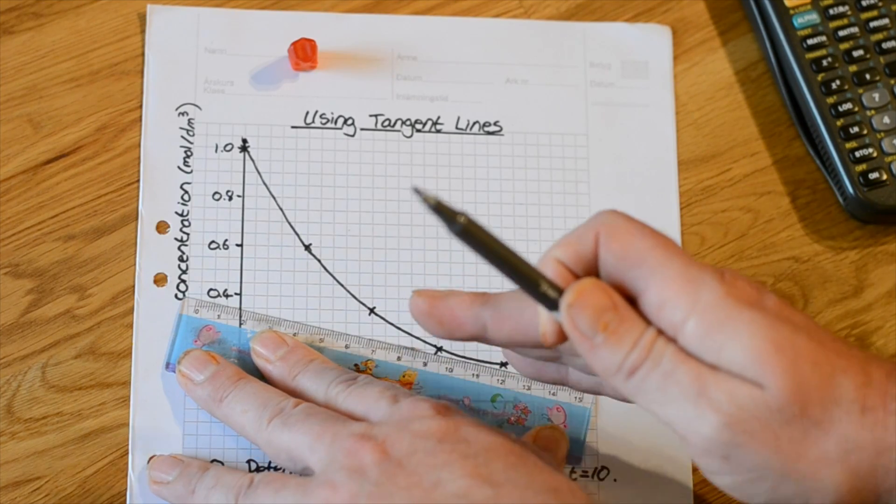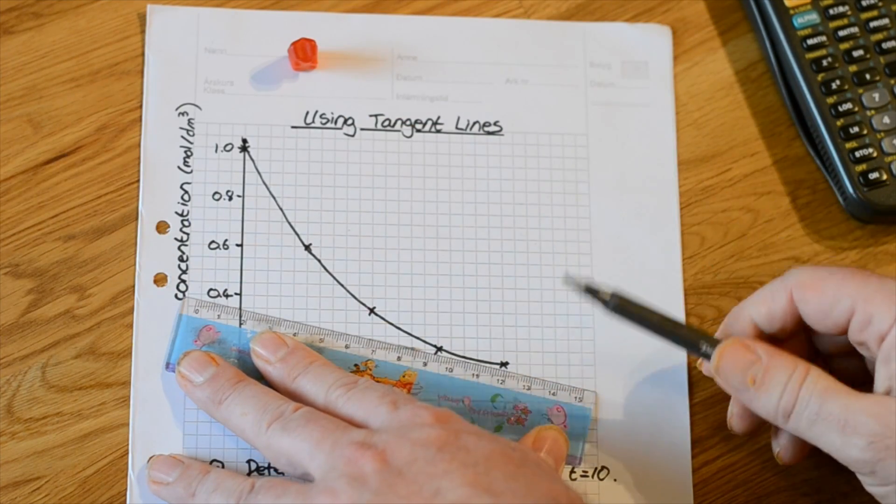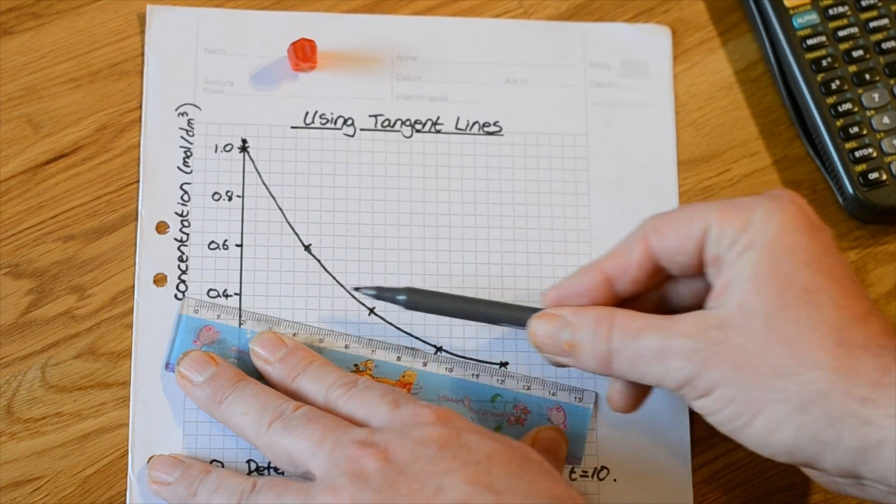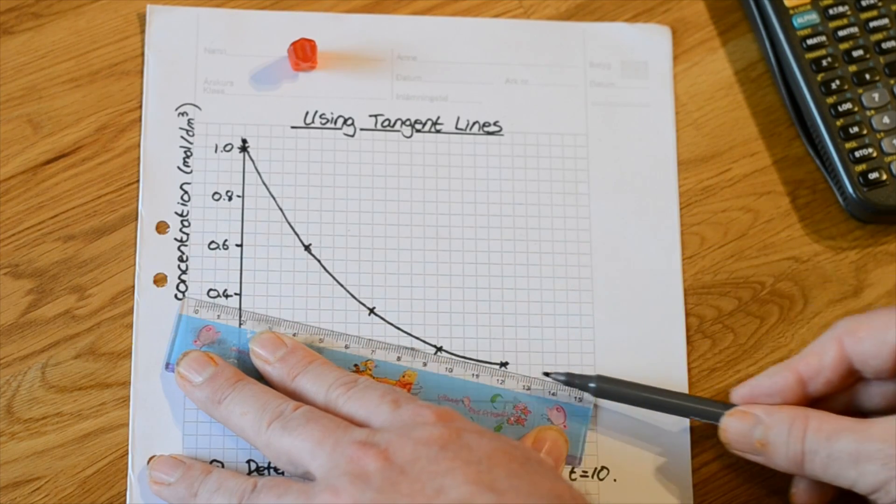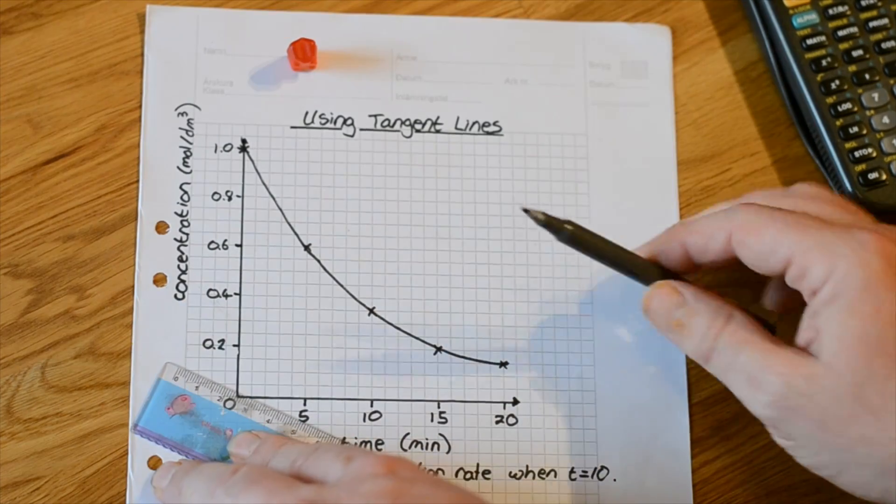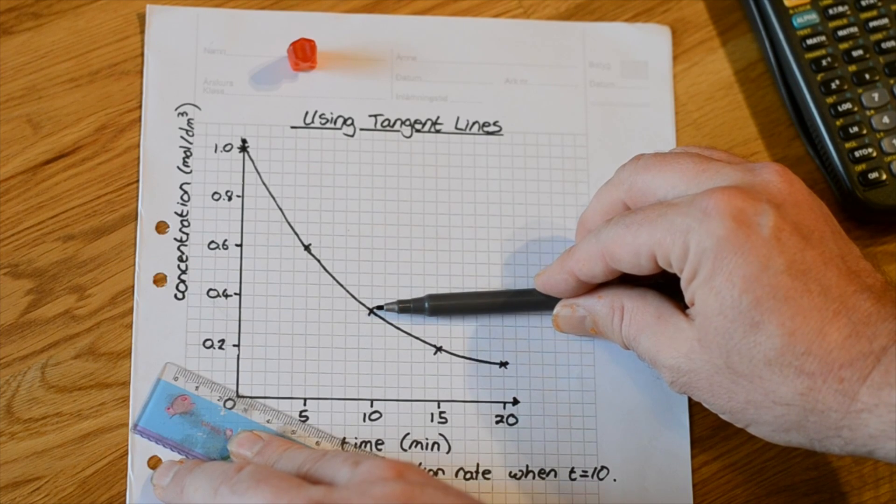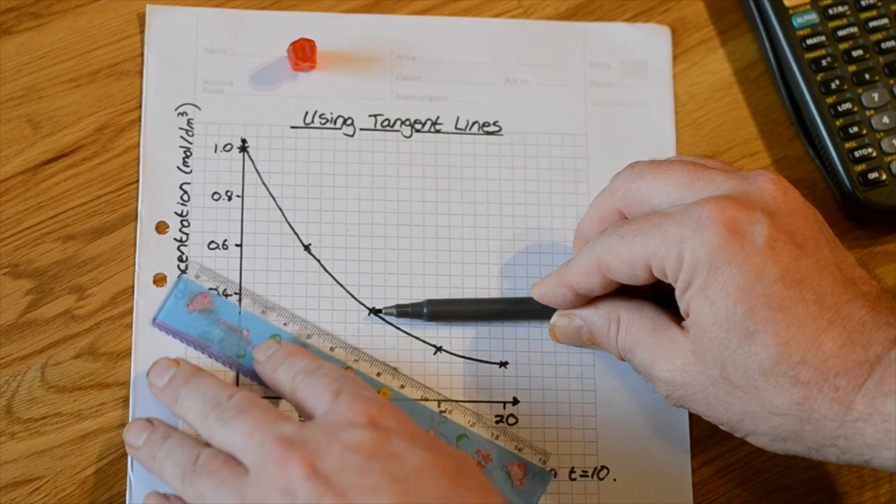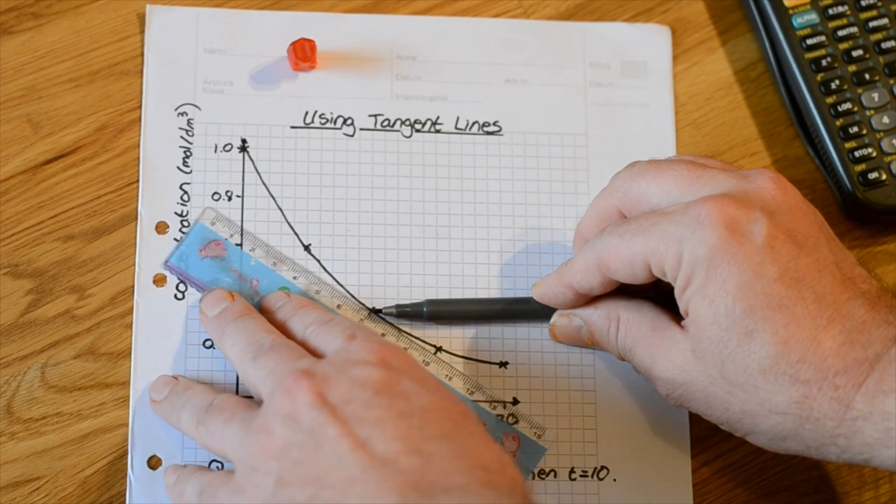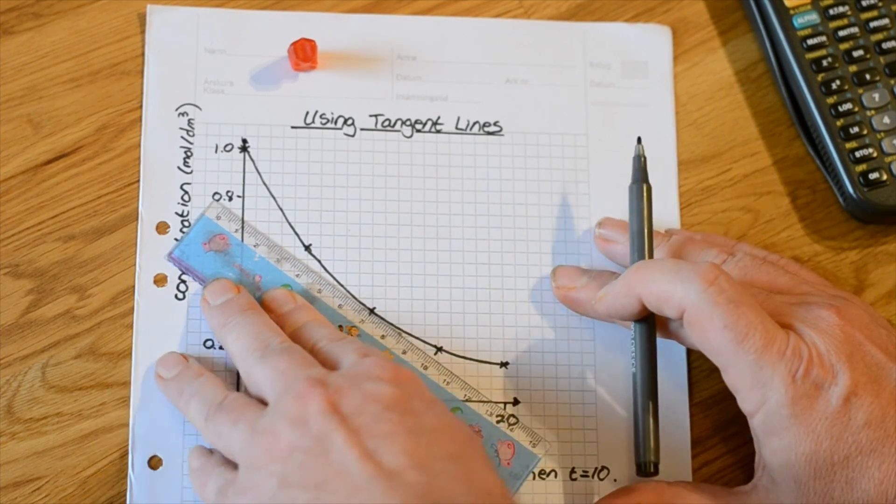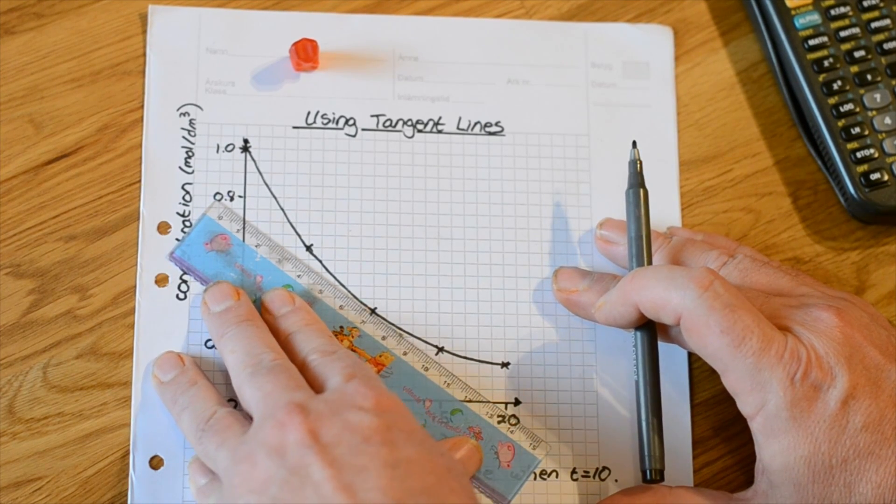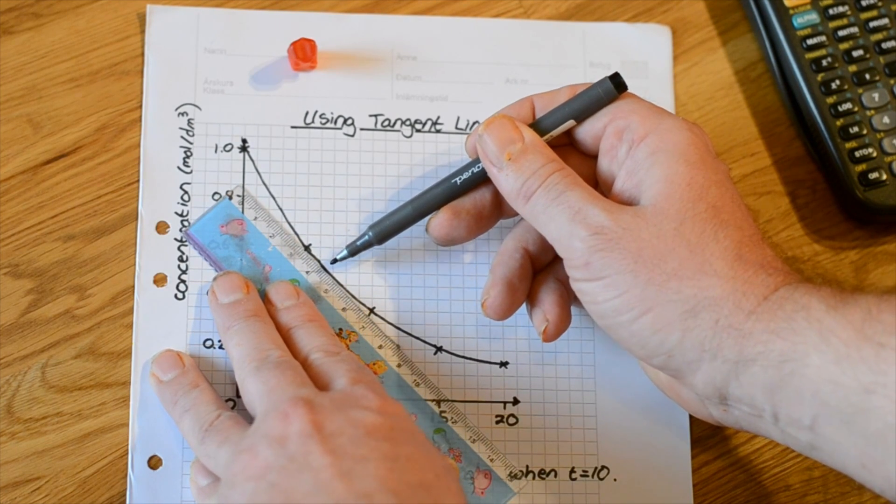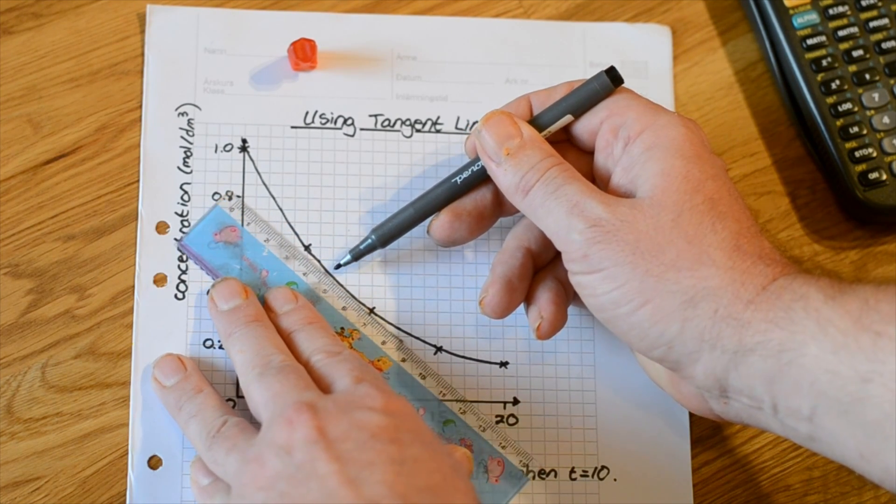We want to move the ruler up to the curve so it touches just once, not twice. That's because this point on the curve has the same gradient as this straight line that the ruler is creating. What we want to do is find the gradient of the curve at this point when time is equal to 10. That means we need to move the ruler up to that point and touch it just once. If you notice, this is roughly in the right place but if I wiggle the ruler slightly,